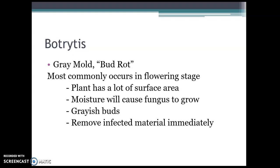This is one that is preventable. Because this happens at the flowering stage, we have plants with a lot of surface area — a lot of leaf matter and wonderful buds that are very rich in nutrition. Those buds have nooks and crannies where moisture can get in and cause the fungus to grow. Those airborne spores can sprout, and in one cubic meter of air there are about a million fungal spores, so there's really no way to completely prevent them.